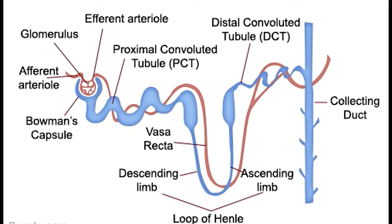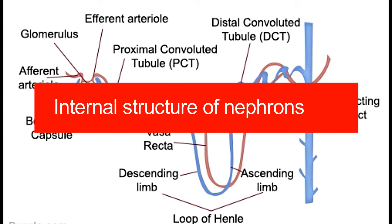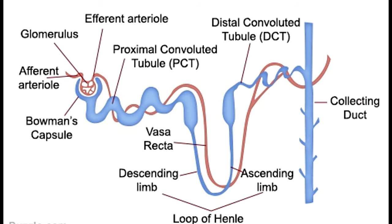A nephron is made up of two parts: the renal corpuscle and the renal tubule. The renal corpuscle, also called the Malpighian corpuscle, is made up of the glomerulus and the Bowman's capsule. This is where water, glucose, and some ionic salts are filtered from the bloodstream. The filtrate formed in this part of the nephron later undergoes a process of reabsorption to form urine.